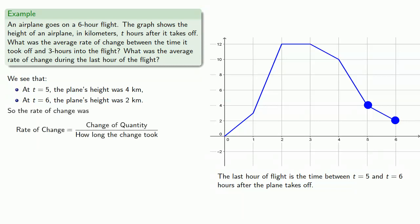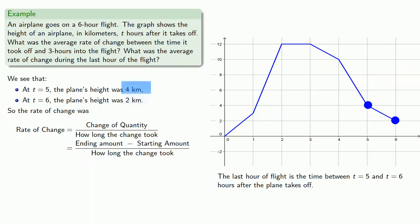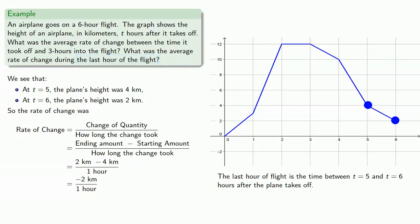Our rate of change is the change in quantity divided by how long the change took. The change is the ending amount minus the starting amount. We ended at a height of two kilometers and started at a height of four kilometers. That gives us minus two kilometers, and the change took one hour. So our rate of change is minus two kilometers per hour.